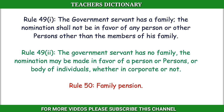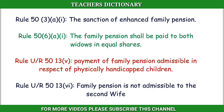Rule 50: Family Pension. Rule 50(3)(AF1): The sanction of enhanced family pension. Rule 50(6)(AF1): The family pension shall be paid to both widows in equal shares. Rule 50(AF1): The family pension is not admissible to the second wife.